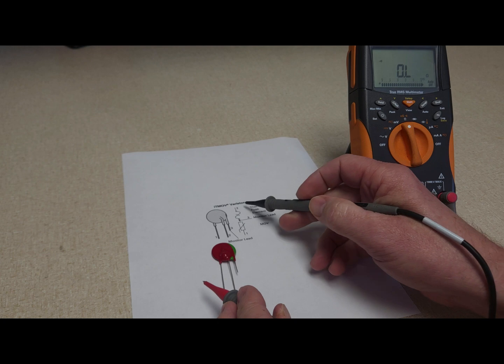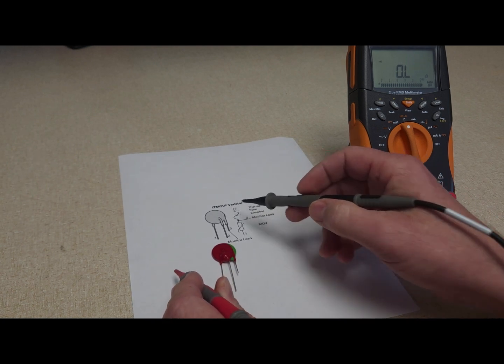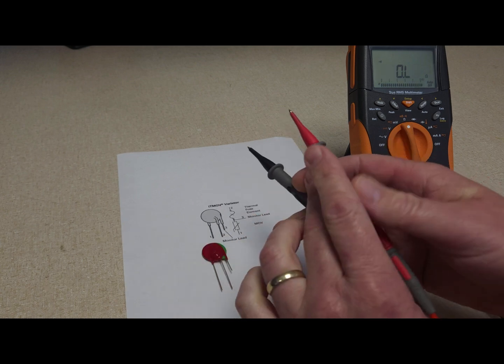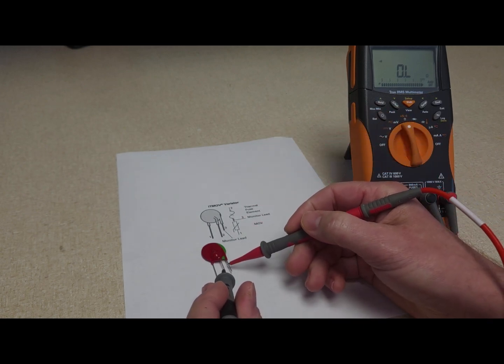Now if I want to test the thermal fuse that's easy enough. I'll go between three and two. Here's three and there's two and you can see the meter beeps and shows continuity. Then I'll change the meter leads again and I should get the same result.